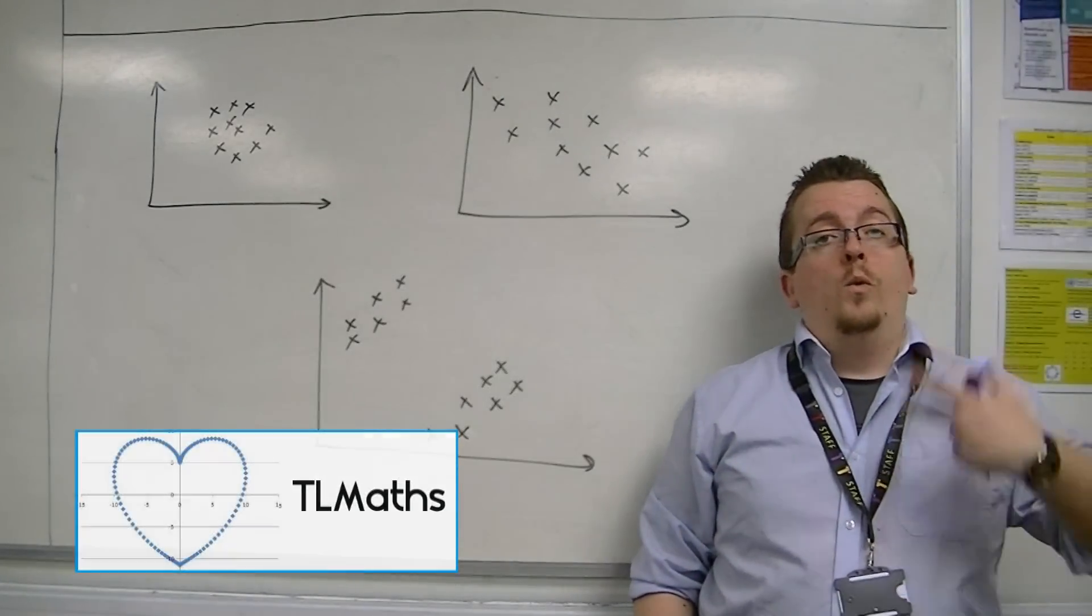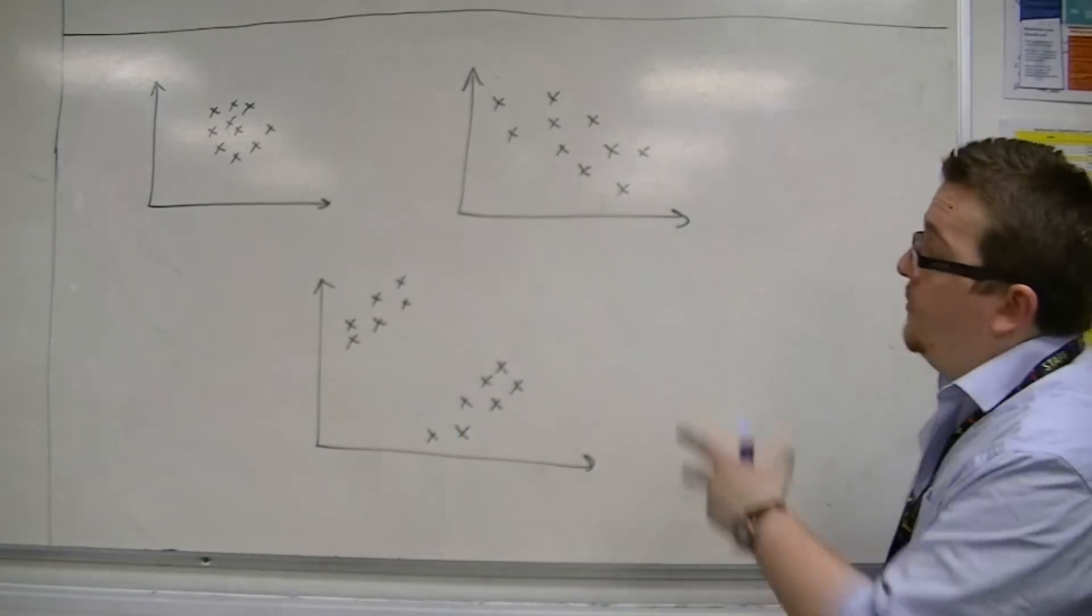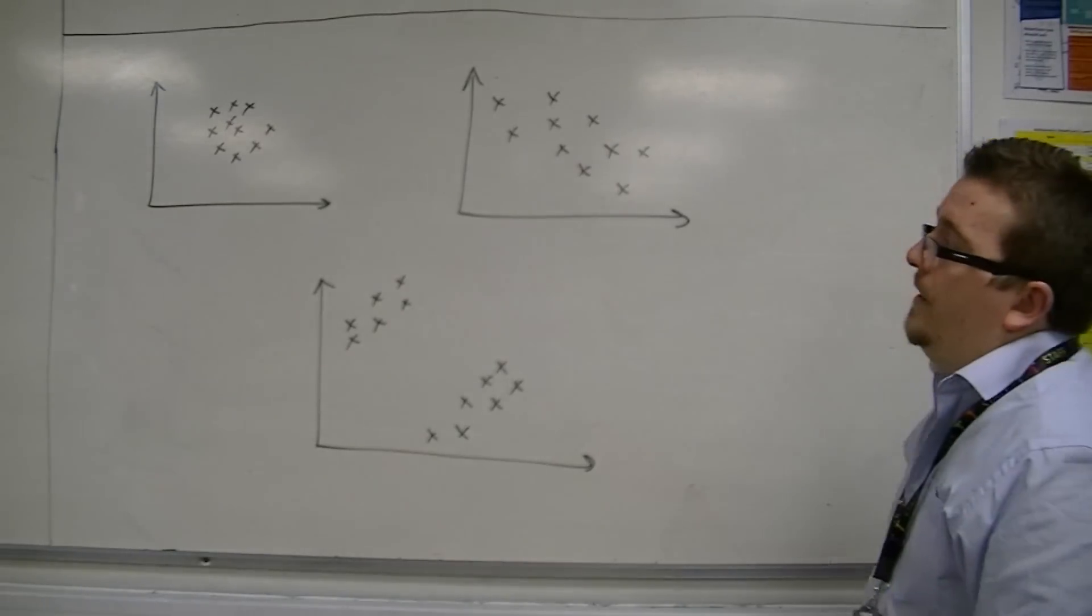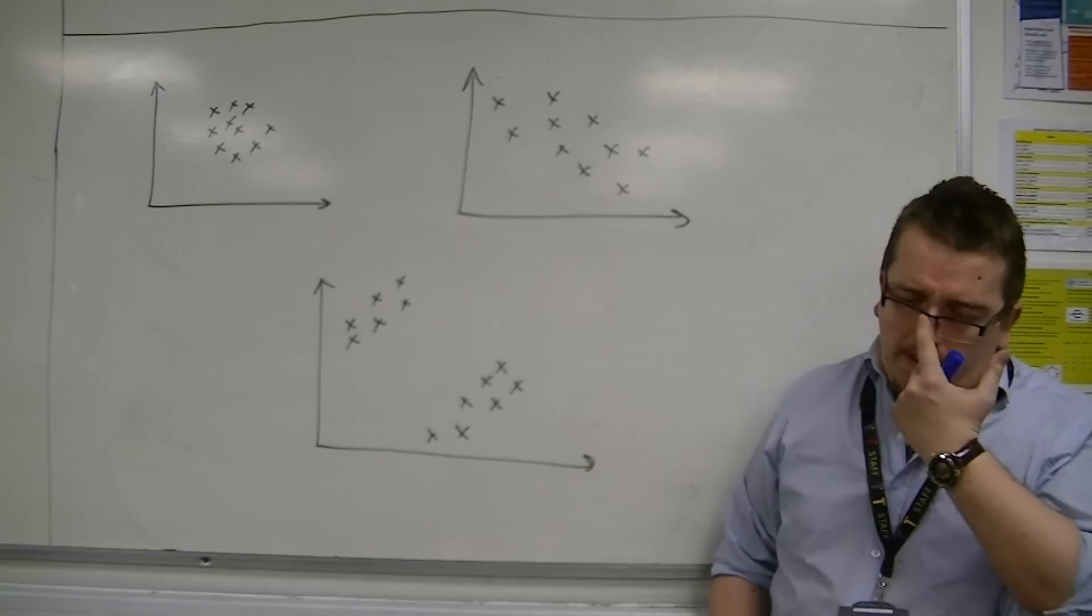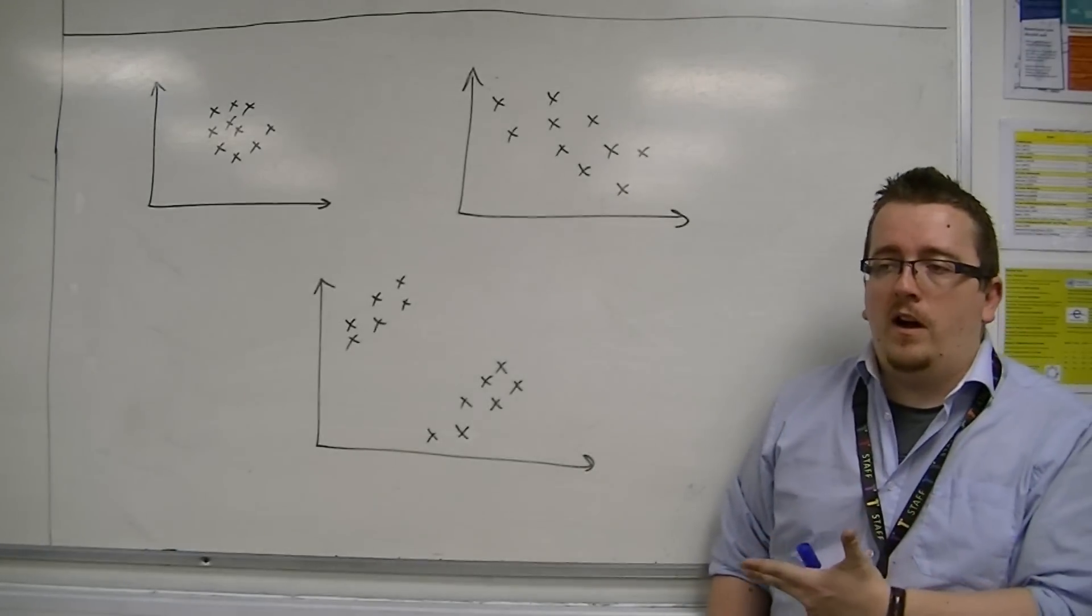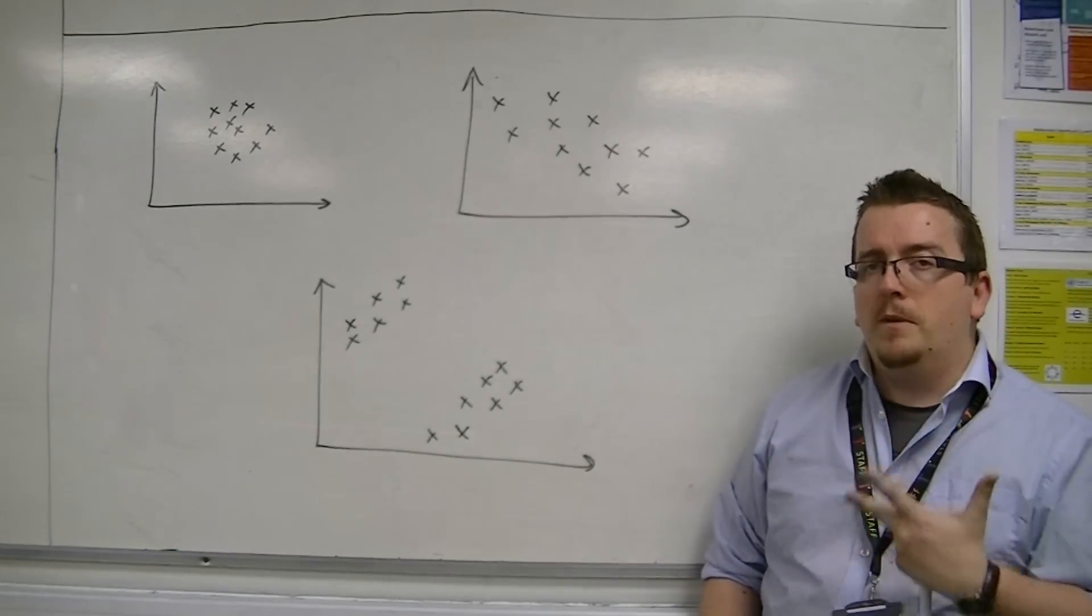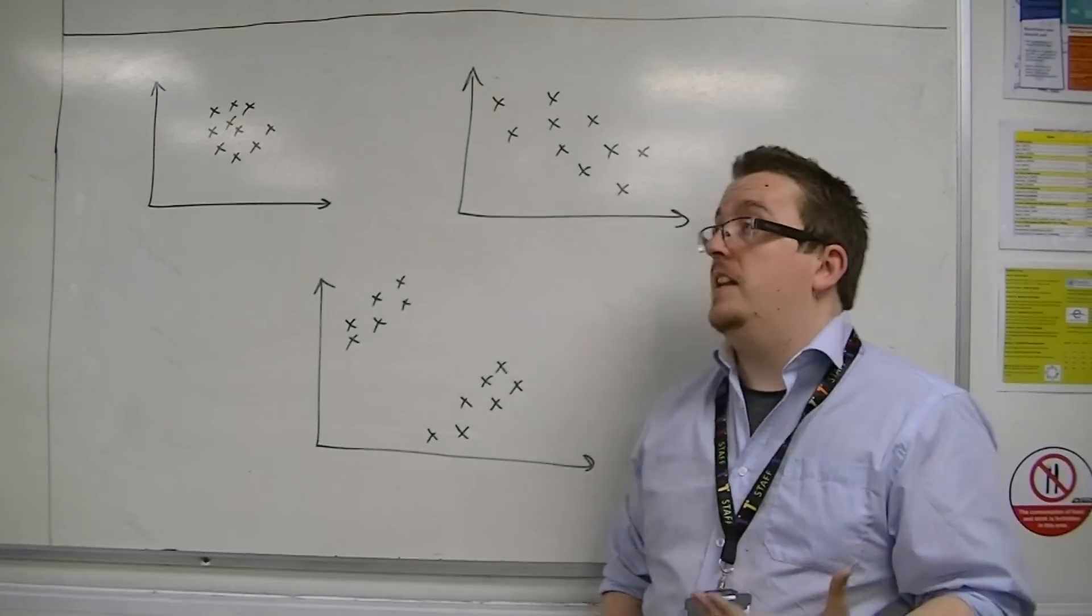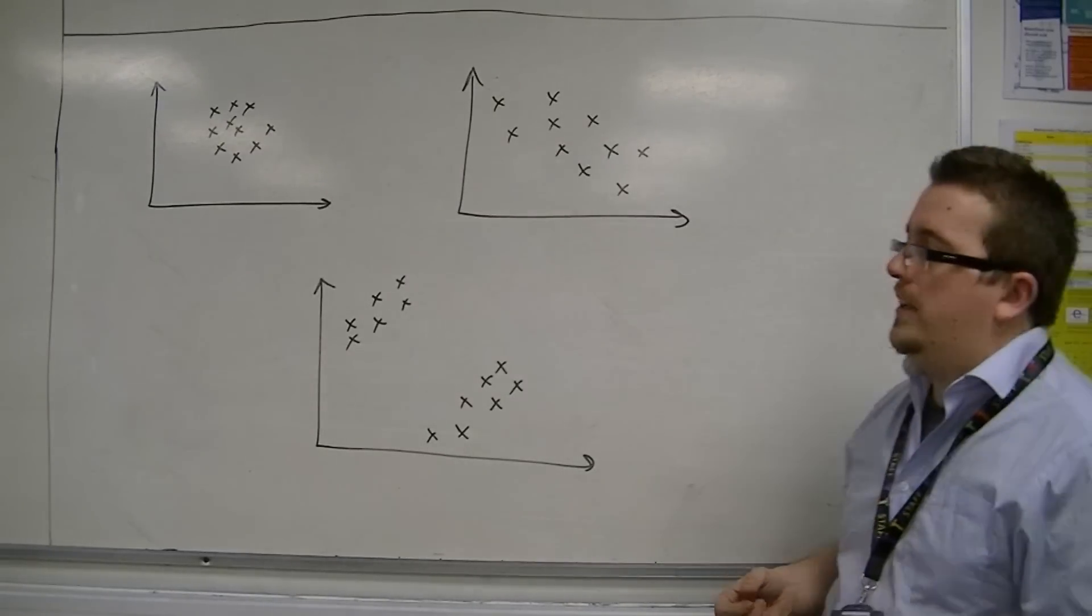So in this video, we're going to be looking at three scatter graphs and trying to determine what the value of R is likely to be. What is the value of the product moment correlation coefficient likely to be in each of these three cases?